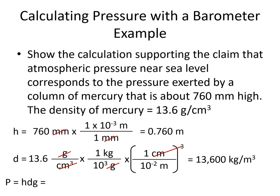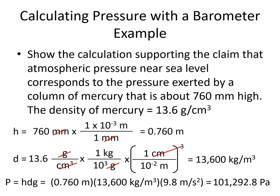Now we have everything in the correct units to plug into our p = hdg equation. We plug in height in meters, density in kilograms per cubic meter, and the gravitational constant in meters per second squared. We get 101,292.8 pascals as our pressure. Looking back at our table, that is approximately equivalent to 760 millimeters of mercury and approximately one atmosphere of pressure — they're all equivalent.